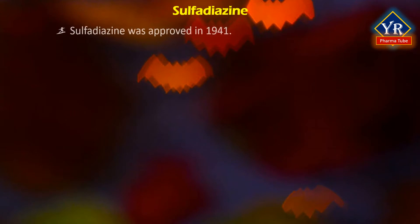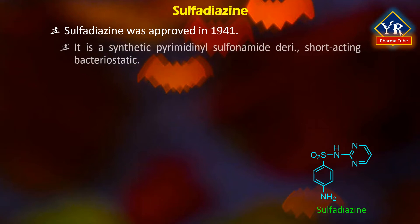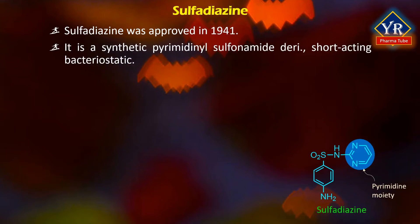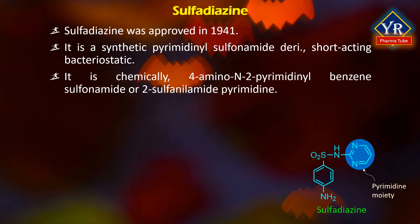Sulfadiazine. Sulfadiazine was approved for medical use in the US in 1941. It is a synthetic pyrimidinyl sulfonamide derivative and a short-acting bacteriostatic agent. It is chemically known as 4-amino-N-2-pyrimidinyl-benzene sulfonamide or 2-sulfanilamide pyrimidine — a sulfonamide consisting of pyrimidine with a 4-amino-benzene sulfonamide group at the second position.